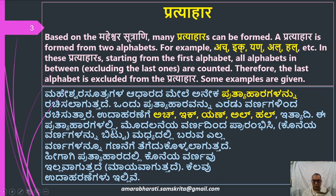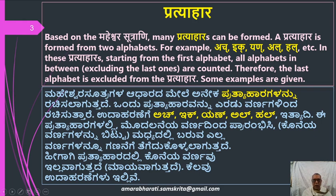In these Pratyaharas, the first alphabet and the second alphabet mark the boundaries. Starting from the first alphabet, all alphabets in between are counted, excluding the last alphabet — the Hal. Therefore, the last alphabet is excluded from the Pratyahara.